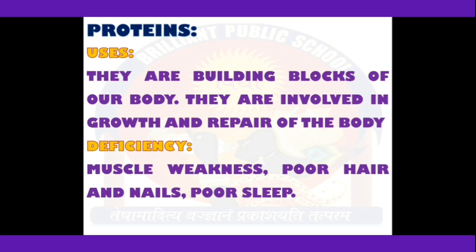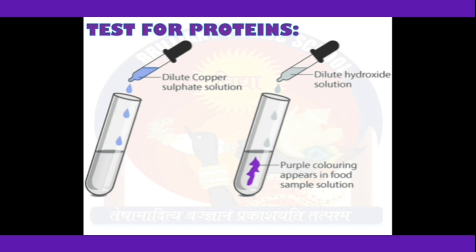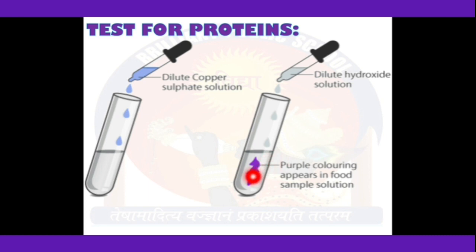To test for proteins, take a food sample in a test tube, dilute it with water, and add dilute copper sulfate solution. Shake it well and warm it slightly. Then add caustic soda solution — which is sodium hydroxide solution; any detergent at home can also work. As soon as you add the caustic soda, the solution will turn purple in color. This purple color confirms the presence of protein in your food sample.